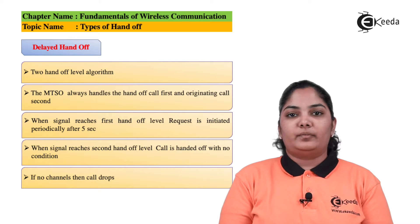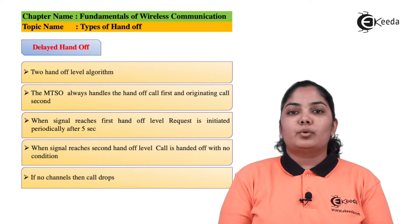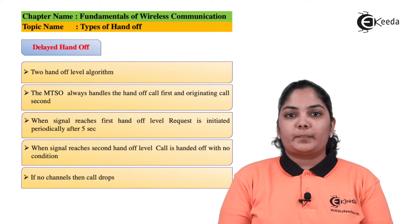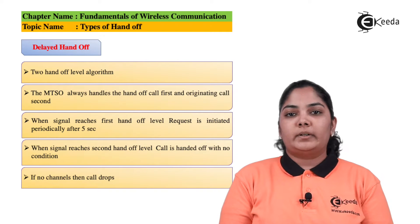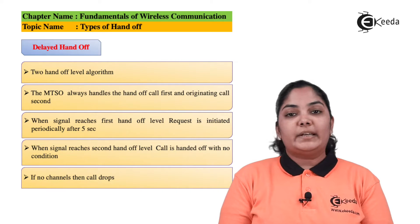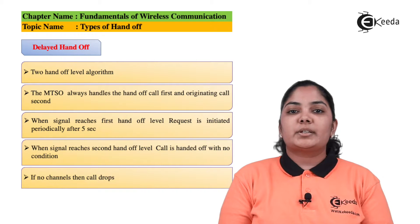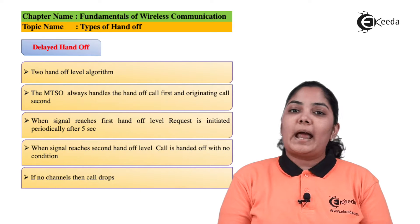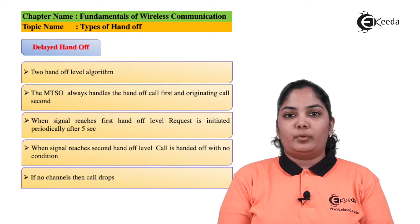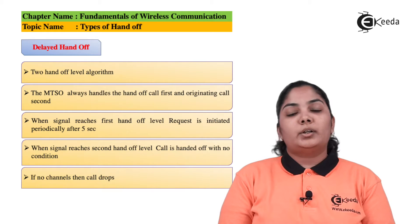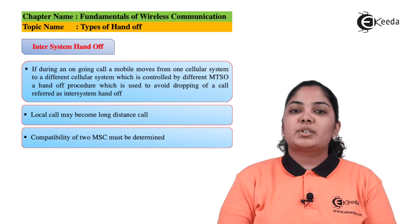The next handoff type is delayed handoff, which is a two-level system. The MTSO always handles a handoff request before a new call origination request. A handoff request is made as soon as the first power level is reached. Periodically, every five seconds, if the handoff is not made and the power level still decreases to the second level, the handoff is done unconditionally. In such a scenario, if channels are not available for handoff, the call will be dropped.